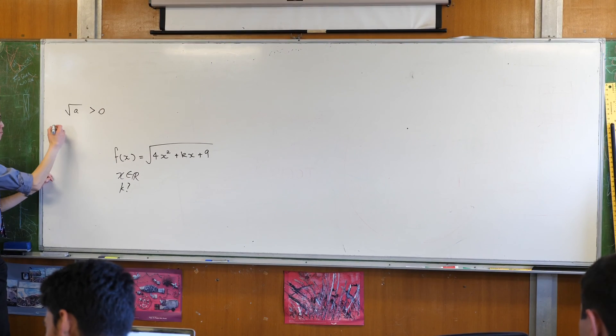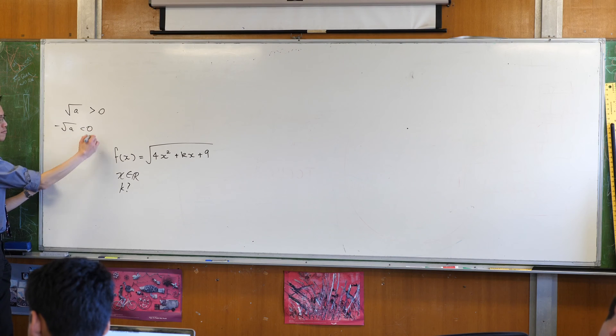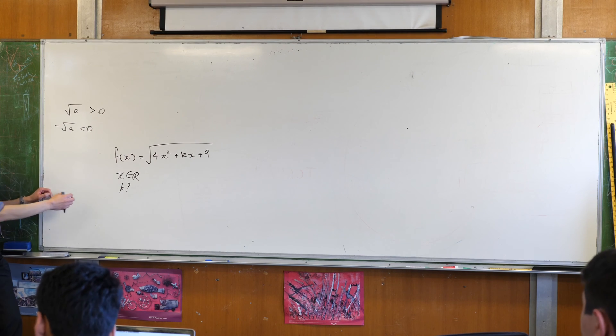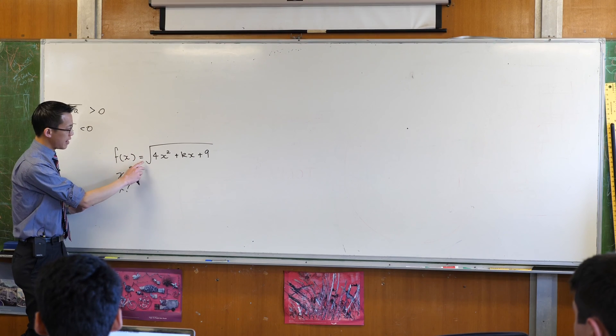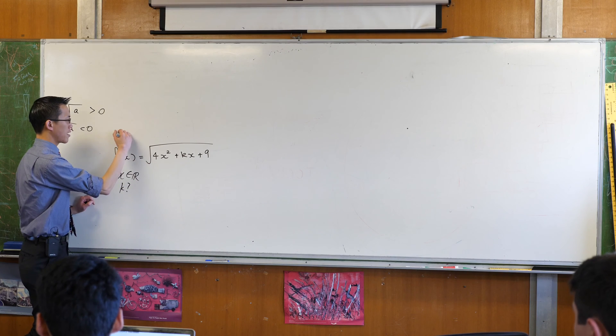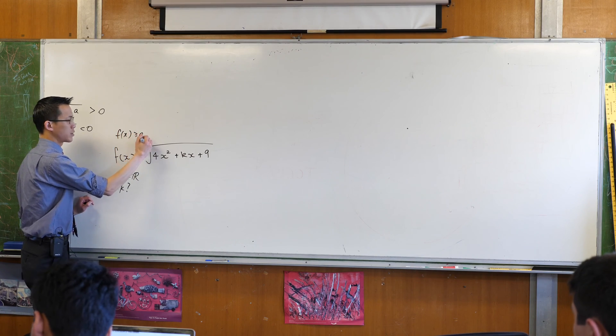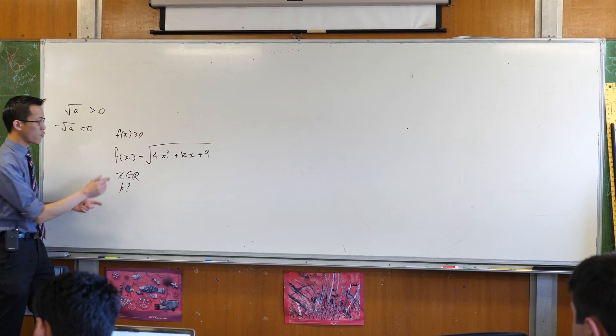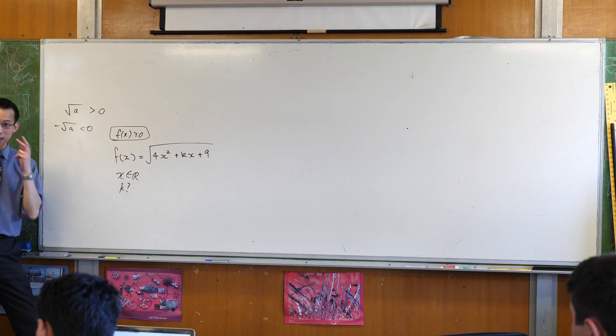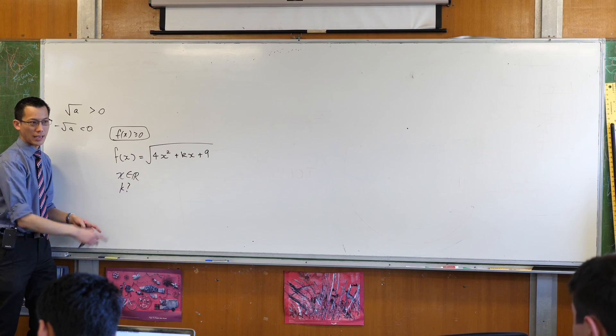If you want the negative square root then you've got to slap a negative sign behind it. So the range of this thing is f(x) has to be greater than or equal to zero. But that is a question about range not about domain. Domain is about what values of x can I put in there.